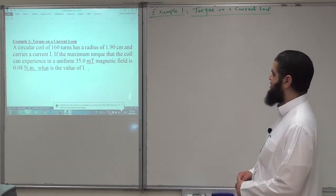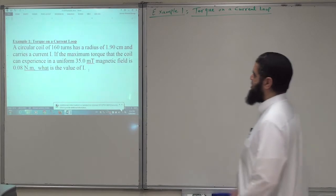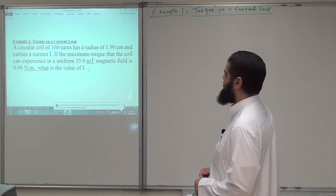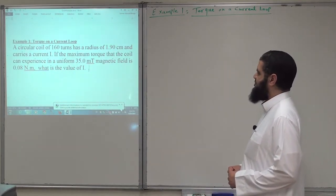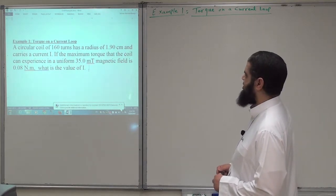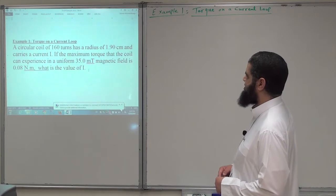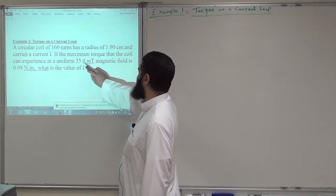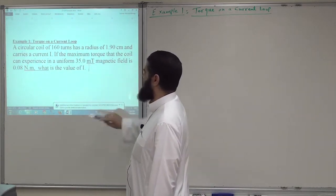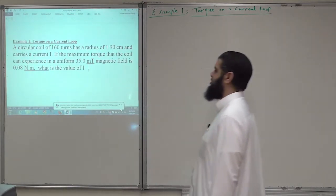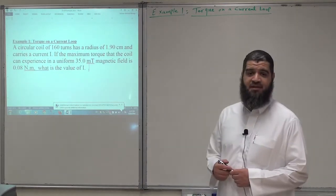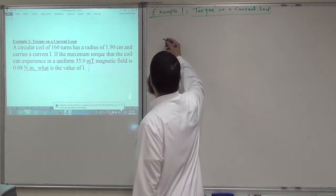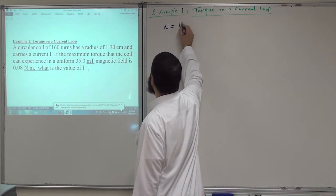This is the first example on the topic of torque on a current loop. A circular coil of 160 turns has a radius of 1.9 centimeters and carries a current I. If the maximum torque the coil can experience in a uniform magnetic field of 35 milli-Tesla is 0.08 Newton-meters, what is the value of the current passing through the coil?